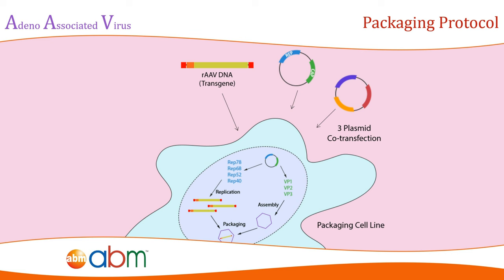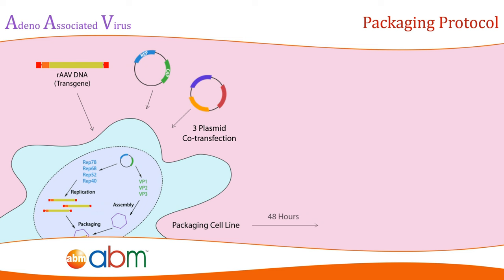Briefly, the HEK293 packaging cell line is prepared the day before transfection with 70% confluency on the day of transfection. Follow the manufacturer's protocol to perform a 3-plasmid co-transfection. 48 hours post-transfection, collect the cells using a cell scraper and subject the cell pellet to 3 freeze-thaw cycles. The freeze-thaw cycles should be performed using dry ice or ethanol baths and a 37-degree water bath.